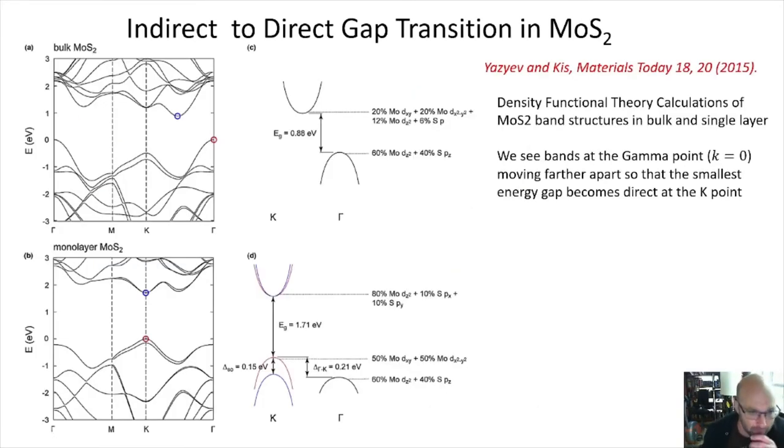This is the situation in molybdenum disulfide in a theory computation reported in Yaziev and Kiss back in 2015. On the top, you see the actual band structure of the bulk MoS₂. The lowest energy gap in bulk MoS₂ occurs between the top of the valence band at the so-called gamma point, which is the k equals zero point of the Brillouin zone, and about halfway to the k point in reciprocal space. It doesn't really matter what all this notation means. It's just delta k does not equal zero, so it's indirect.